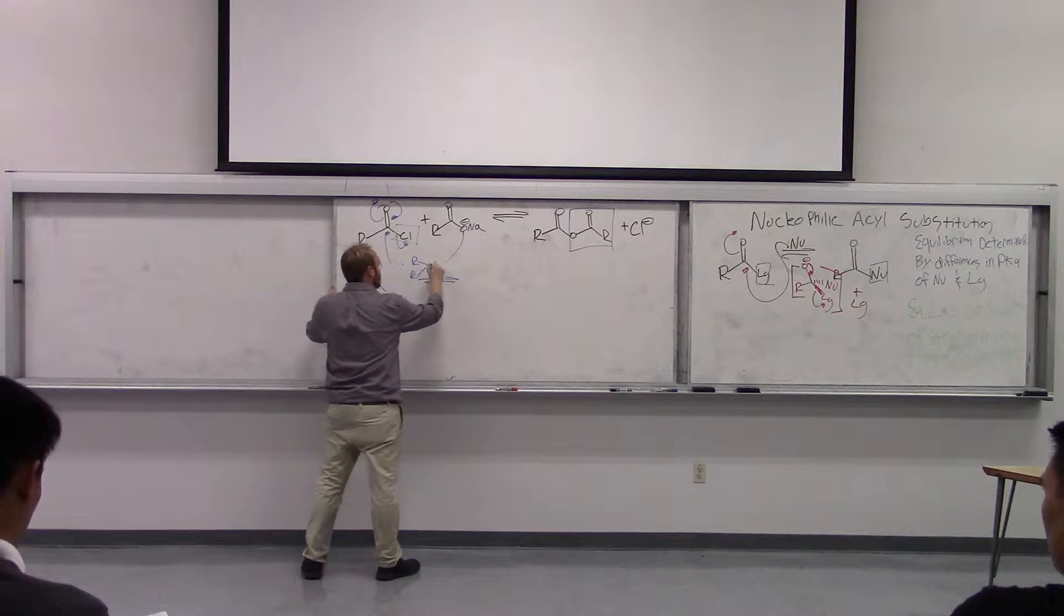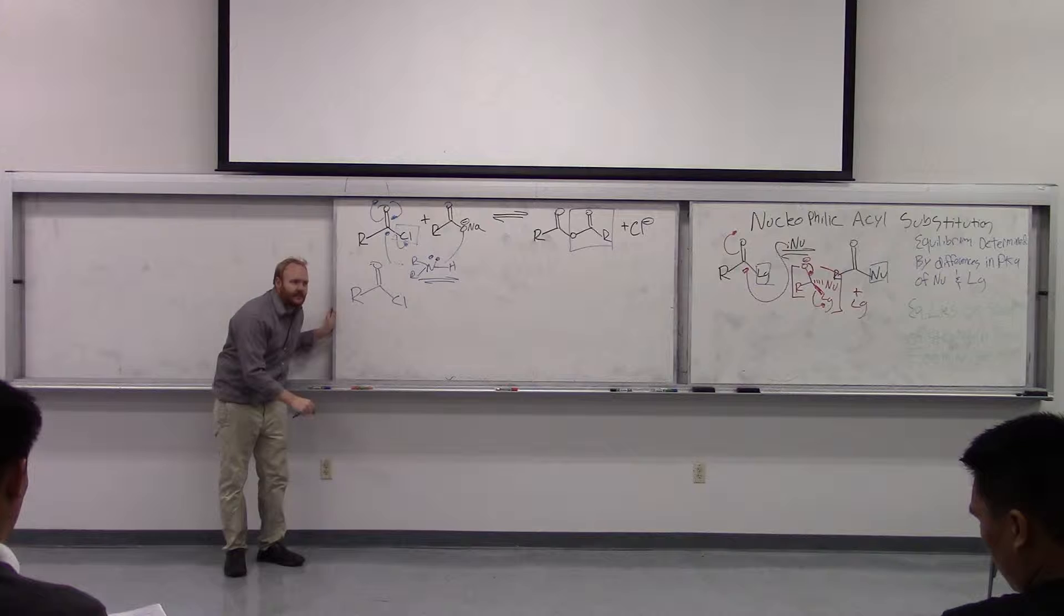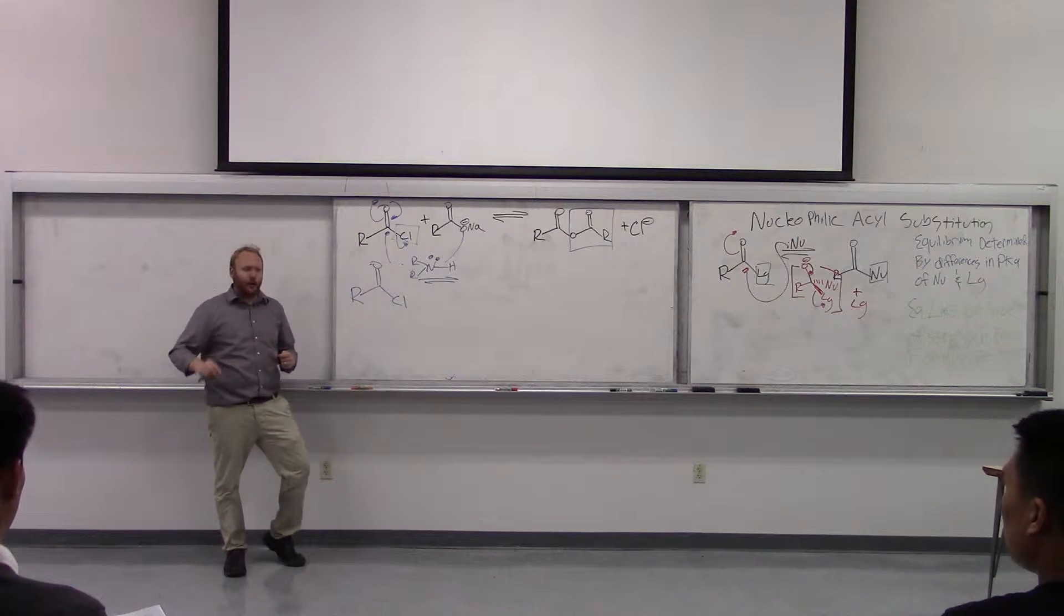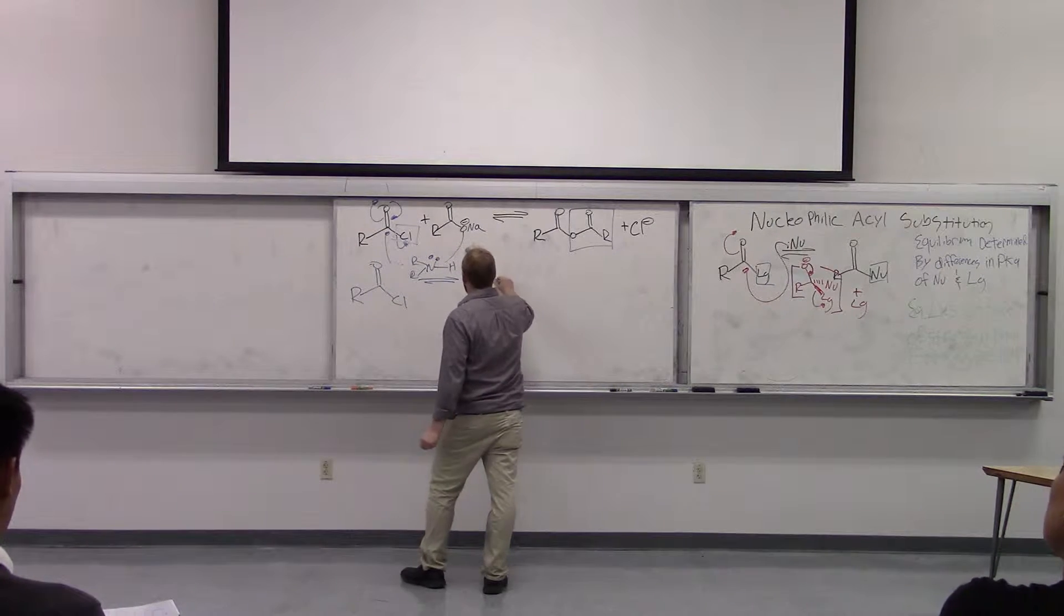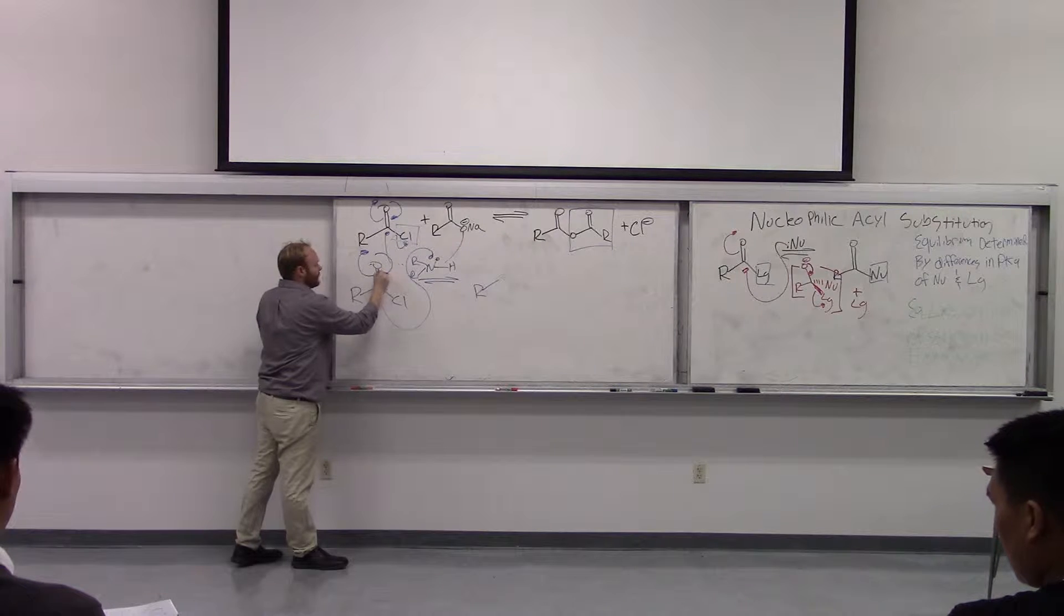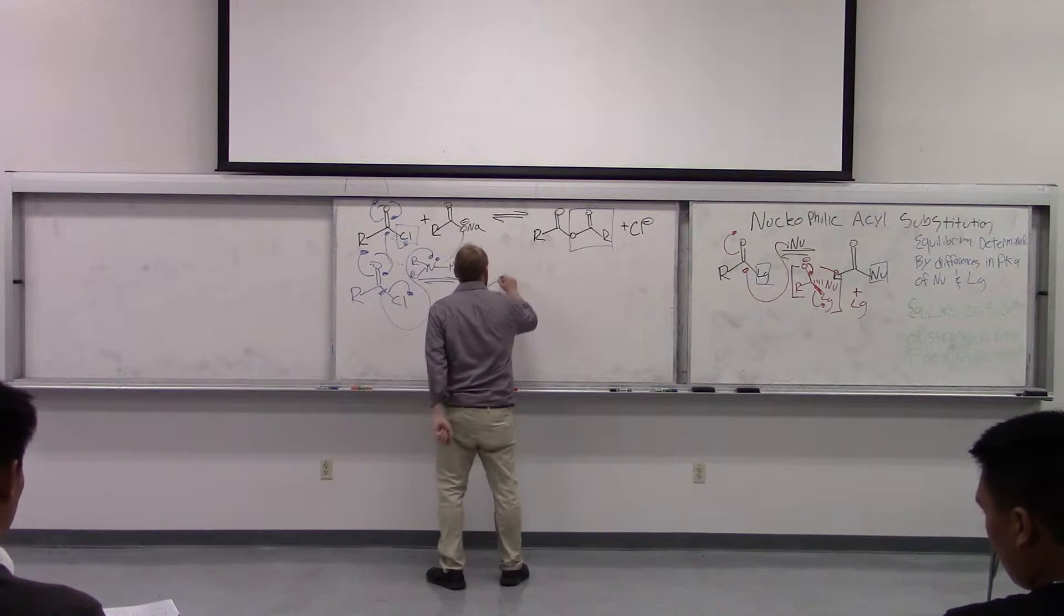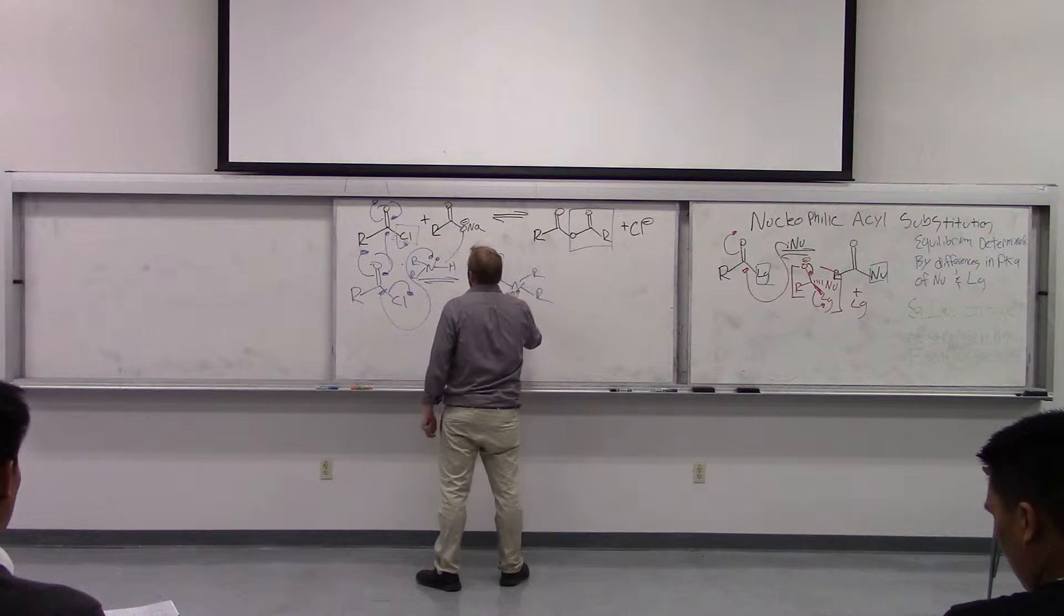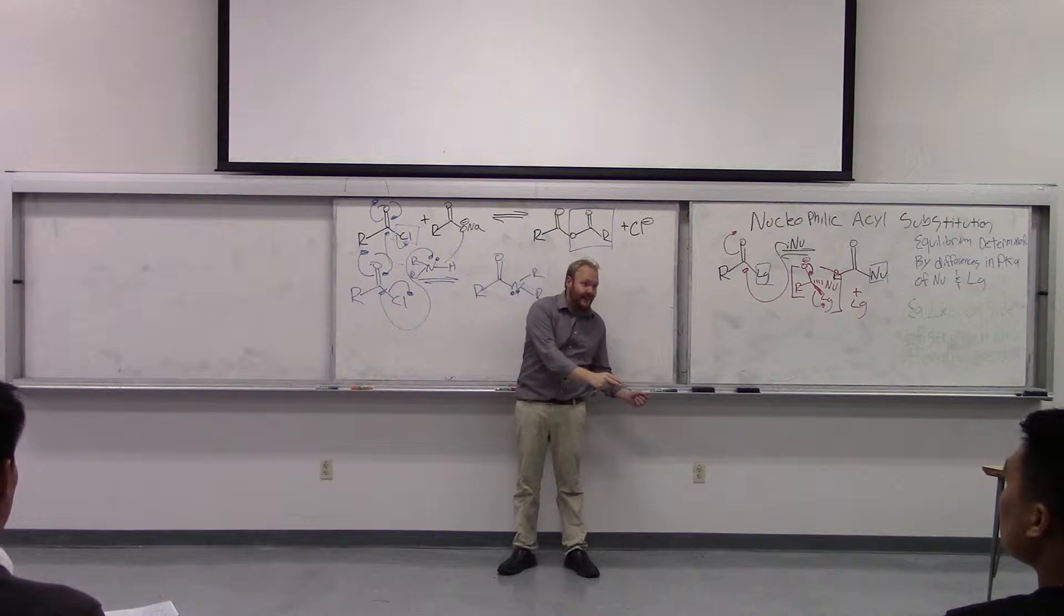So we have an acid chloride. And we have an amine. In this case it's a secondary amine, but as long as we have a primary or a secondary or ammonia, nothing's going to change. Tertiary amines won't do anything, but primary and secondary and ammonia will do this. So we have an amine that has at least one hydrogen attached to it, and that will eventually give us this attacking, tetrahedral intermediate. Then collapses, kicking off Cl-.